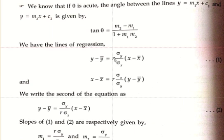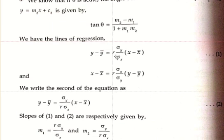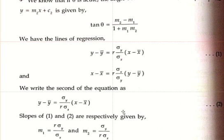The slopes of equation 1 and 2 are respectively: from equation 1, y equals mx, so m1 equals r into sigma y divided by sigma x. And from equation 2, we take this as m2. m2 equals sigma y divided by r into sigma x.